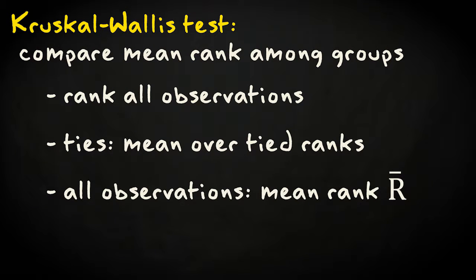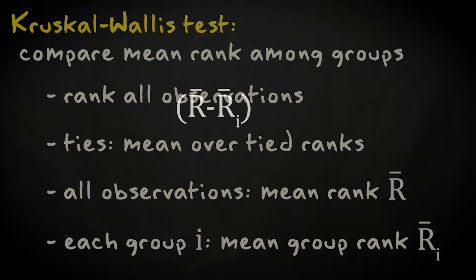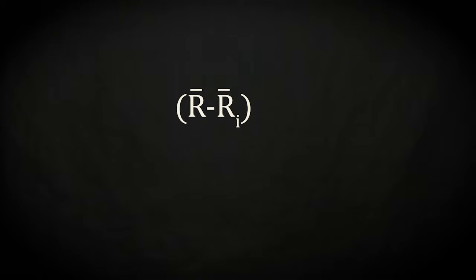Next, the mean rank R-bar is calculated and subsequently the mean rank for each group, Ri. Then, the difference between each Ri and R-bar is squared and multiplied with the sample size of each group, Ni. All of these sample weighted squared differences are summed and multiplied with a constant where n is the total sample size.